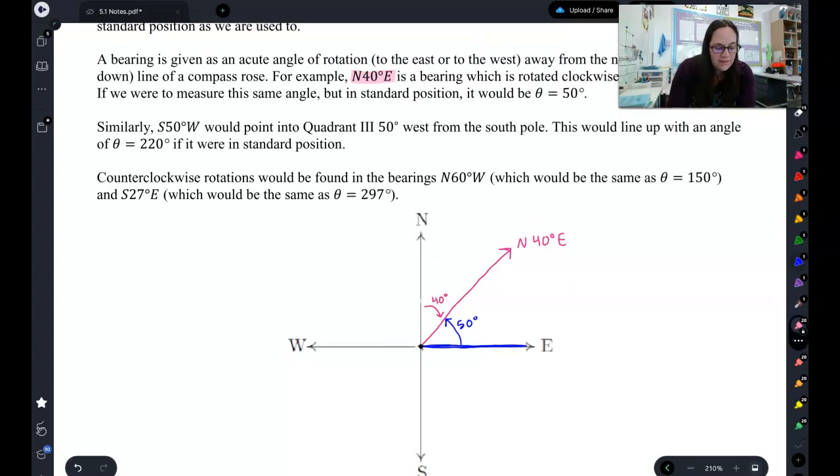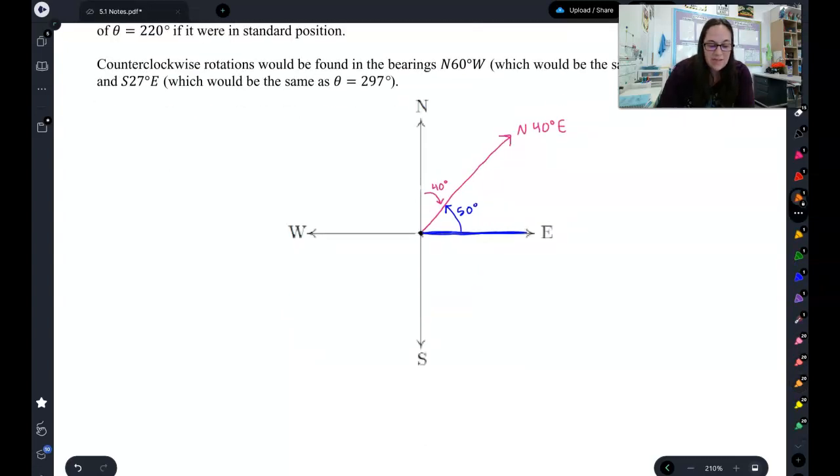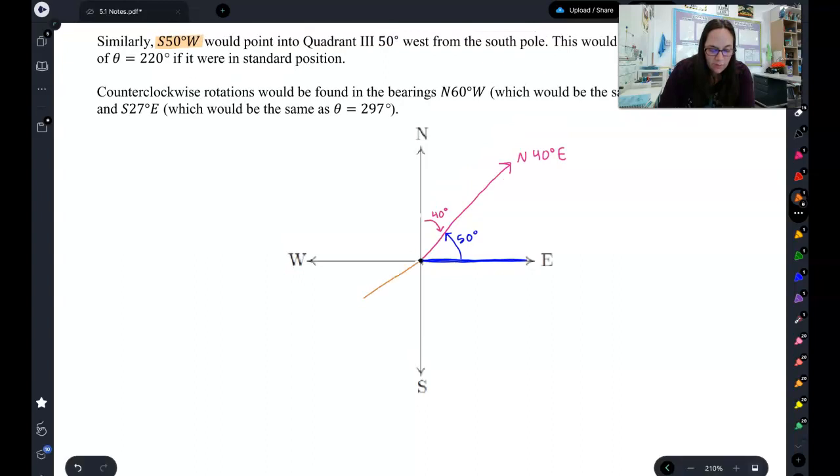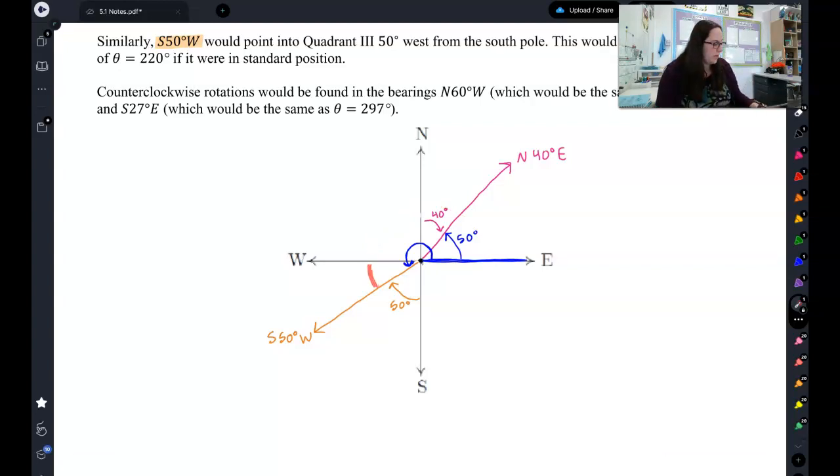So let's try another one. Let's say we have south 50 degrees west. Let's do this one in a different color. Let's do orange. So now we go in the south direction, and then we're going to go 50 degrees west in the west direction. So south, and then we go 50 degrees west. So south, 50 degrees west. So if we put this in standard position from the positive x-axis, that would be that angle, which would be 180 plus 40 more. So 180 plus 40 would give me 220 degrees. So if I said south, 50 degrees west, that would be the same thing as 220 degrees in standard position.